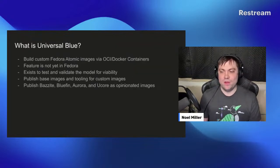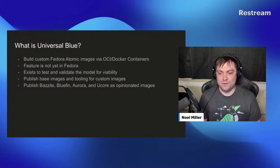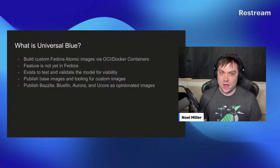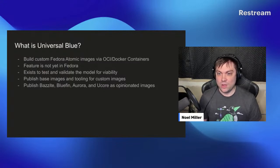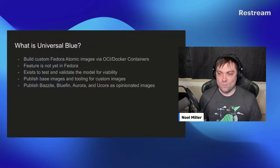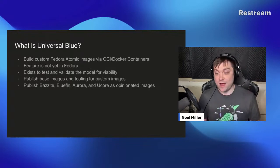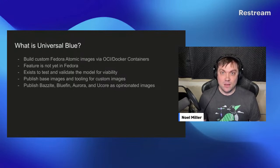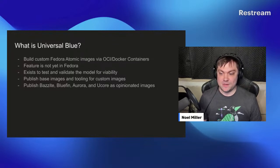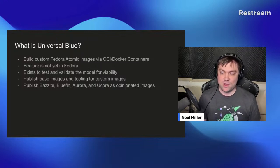So what is Universal Blue? We build custom Fedora atomic images, which Timothy talked about earlier, based on OCI Docker-based containers. This feature is not officially in Fedora, so we are working to have this be a more official portion of Fedora along with the boot-c initiative. We exist and became what we are because we wanted to test and validate the model. We publish base images and tooling for custom images, and the main downstream or opinionated images we publish are Bazite, Bluefin, Aurora, and uCore.